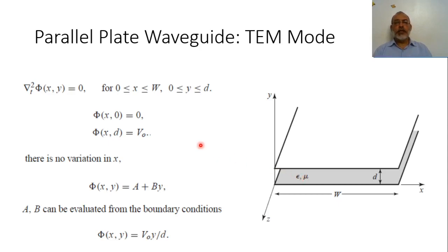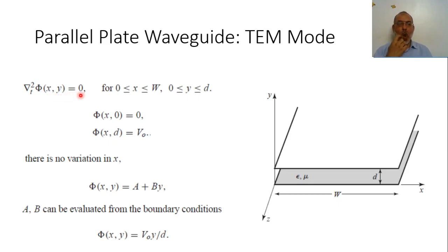As we said in the previous video, the first step in analyzing the TEM mode in waveguides is to solve Laplace's equation. The Laplace equation is: nabla-T squared phi of x, y equals zero, where nabla-T squared is the second derivative with respect to x plus the second derivative with respect to y.